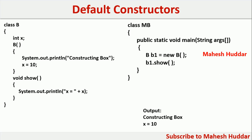Now let's take a simple example to understand the default constructor. Here I have created a class called B. It has a member X of type integer. I have defined a constructor — notice that B is the class name, and I have taken the same name for the constructor. It does not have any return type and it is not taking any parameter, so it is a default constructor. It has a print statement that says 'constructing box' and an initialization statement where X is set to 10. There is also a normal method called show which does not return anything and will print the value of X.